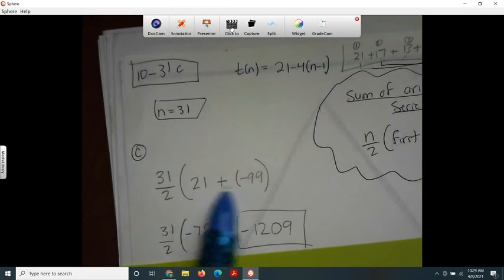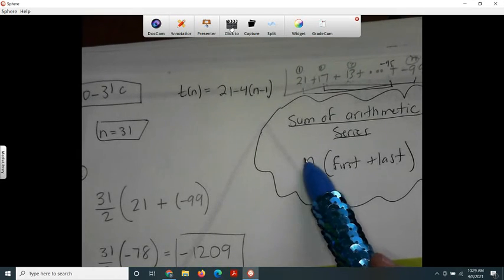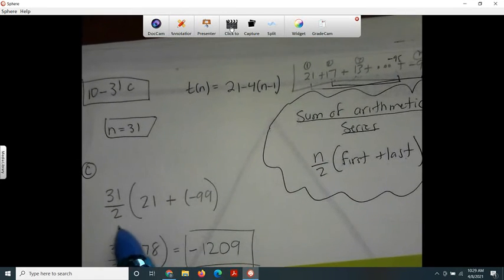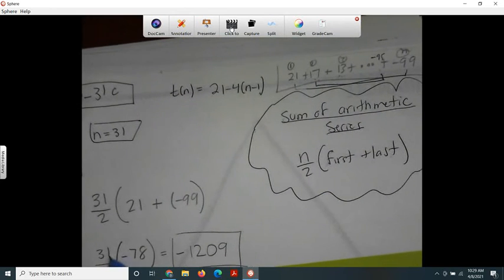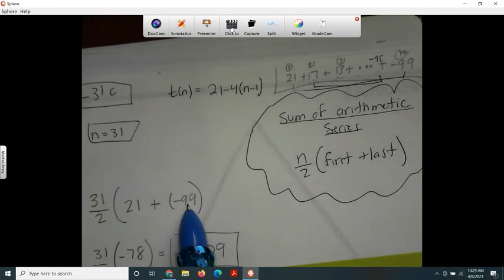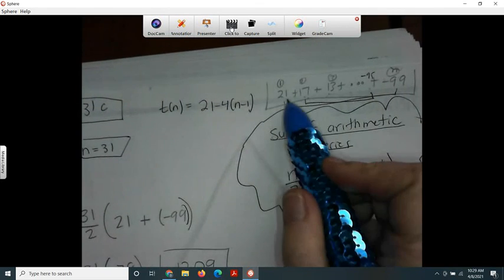So all you've got to do is just plug the numbers in. We've got n—you already said n was 31—over 2, and then the first plus the last. We can just grab them right off here.